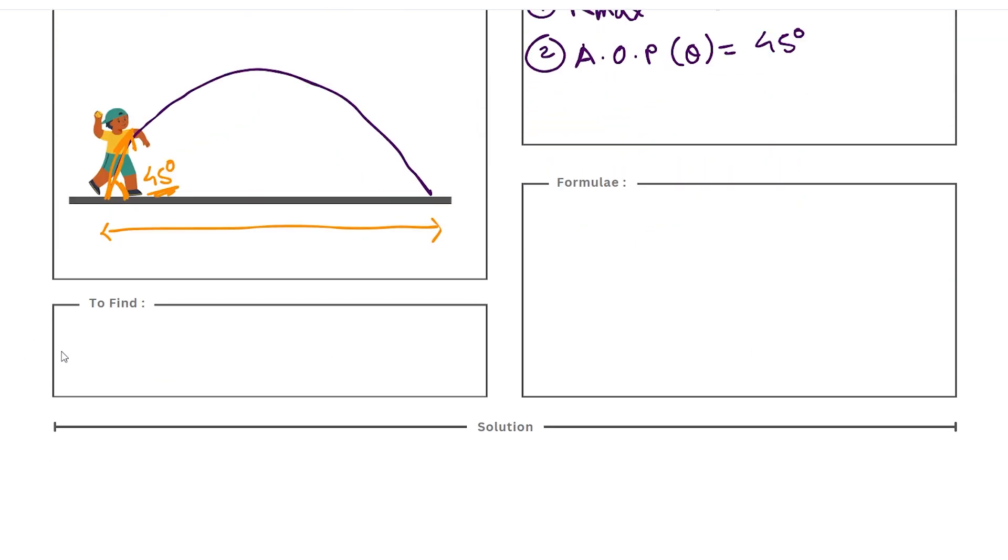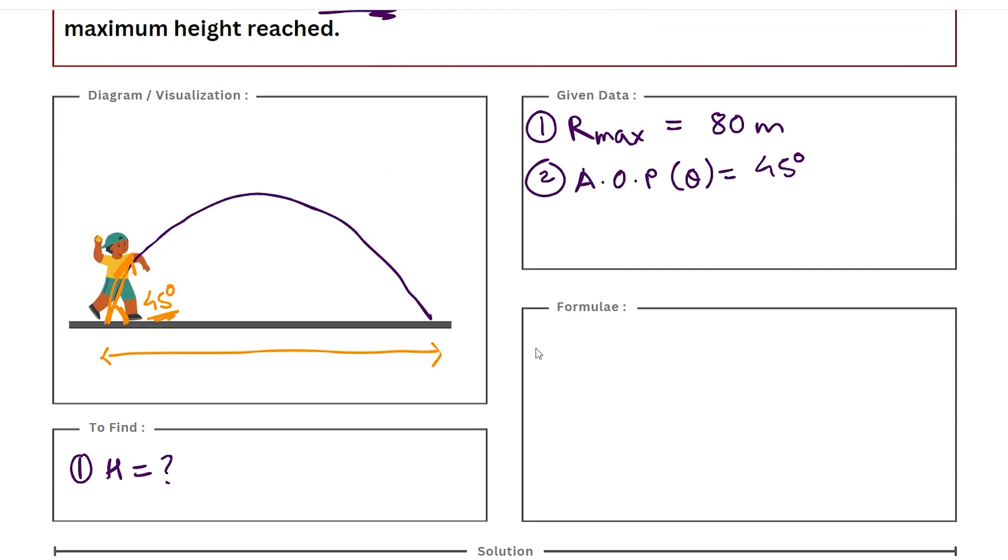Now what do we need to find? Well, we need to find the maximum height, which we represent as H for this particular setup. Okay, so that is unknown to us. Only one quantity we need to find. And what sort of formulas we'll be using? Well, we'll be using the formula for range obviously because that's been given to us.